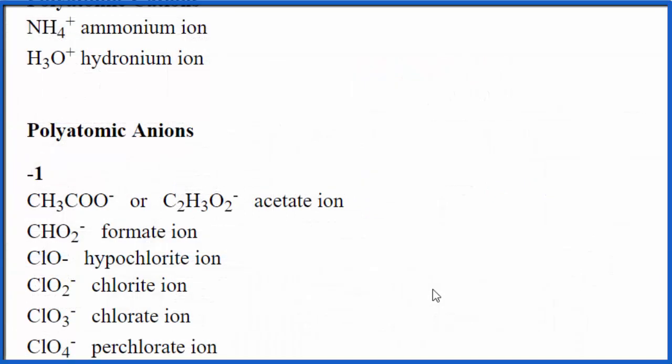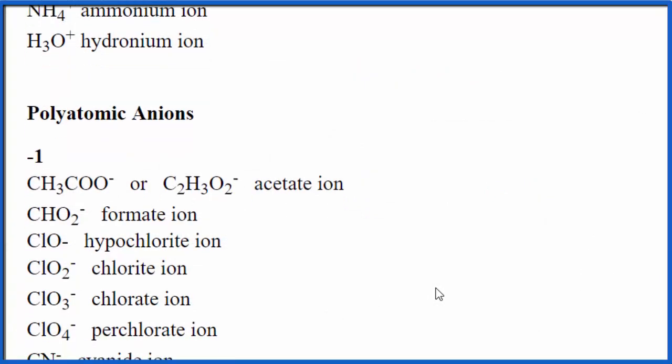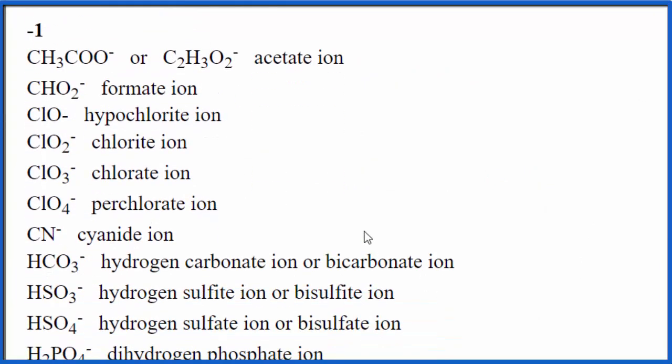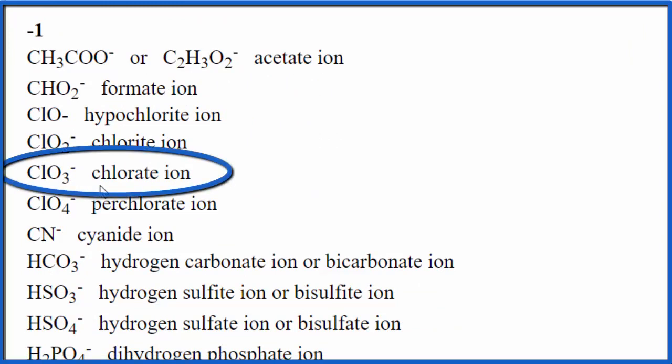Scrolling down the list, we're looking for the chlorate ion. We come down here and see hypochlorite, chlorite, and there — ClO₃⁻ is chlorate.